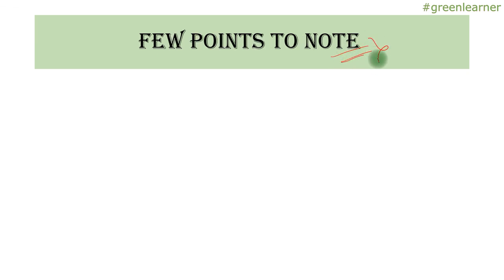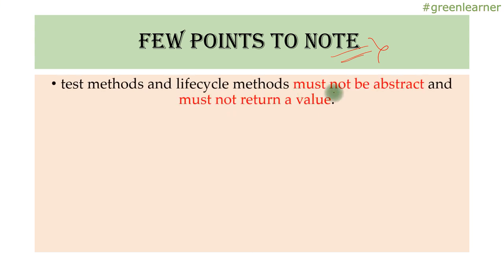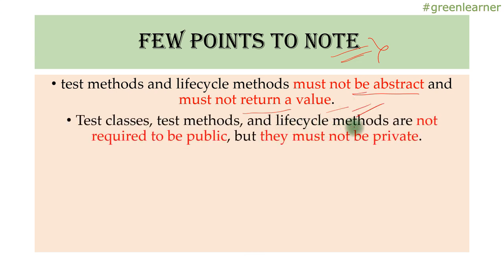A few points to note about test classes, test methods, and lifecycle methods: test methods and lifecycle methods must not be abstract and must not return a value. Test classes, test methods, and lifecycle methods are not required to be public, but they must not be private. Apart from the private access modifier, they can take any modifier — public, protected, or default. So this is about the properties. Let me take you to the project and show you all of this in a quick demo.